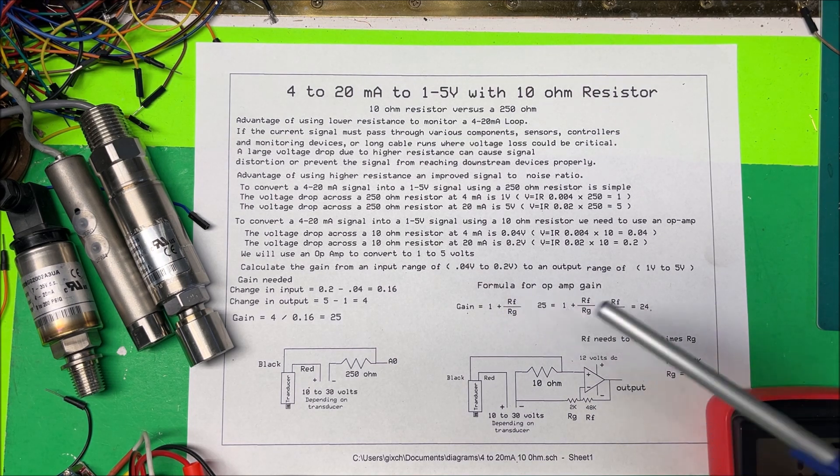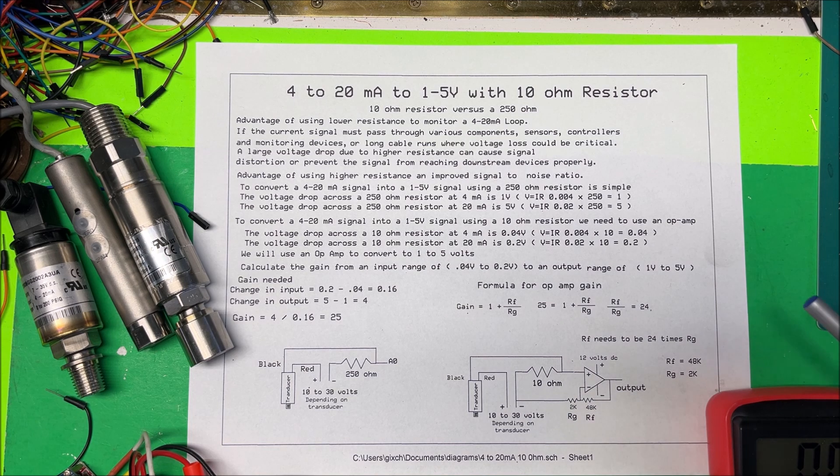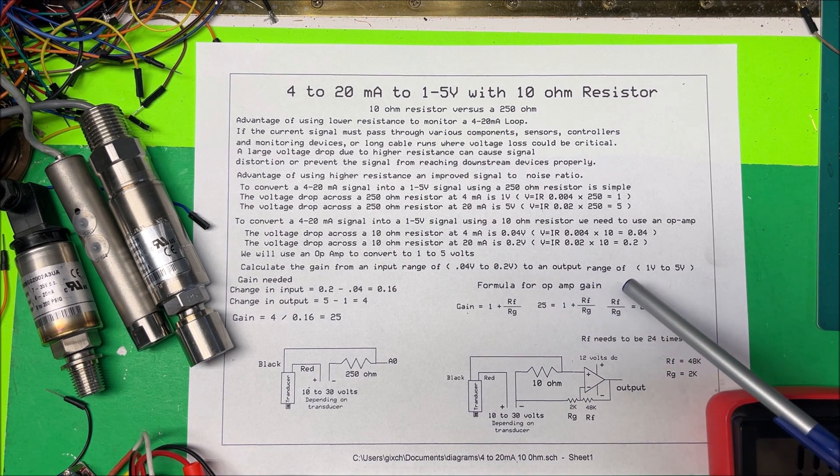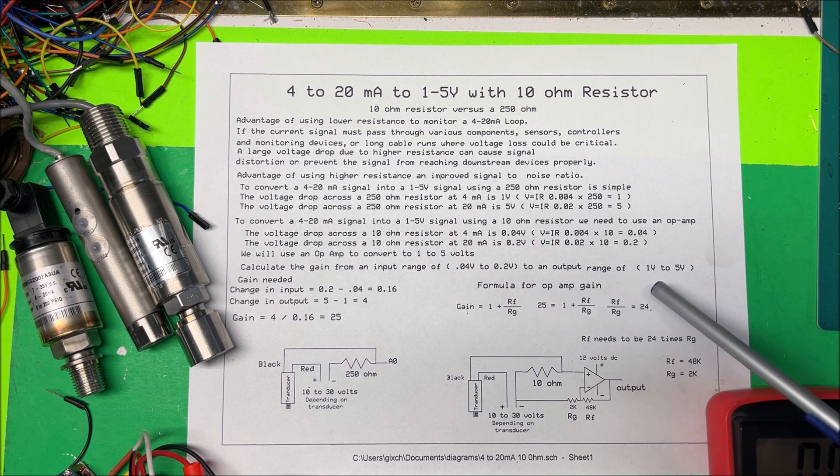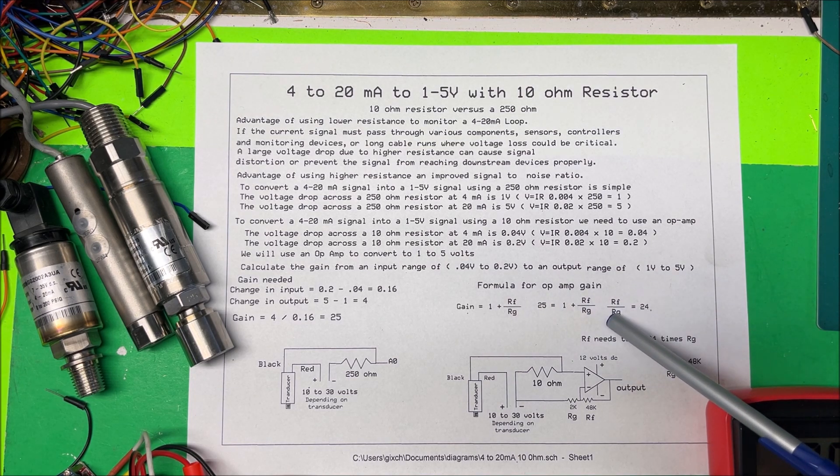Rf is the feedback resistor and Rg is a resistor tied to ground. So we get rid of the 1 there, put that on the other side, so we have 24. So Rf needs to be 24 times Rg.